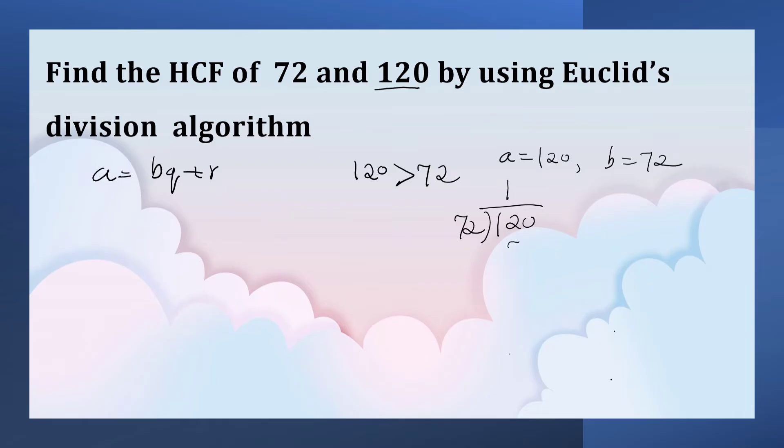Ones are 72, 10 minus 2, 8, 48. So 120 can be written in the form of A is equal to BQ plus R like 120 is equal to 72 into 1 plus 48.